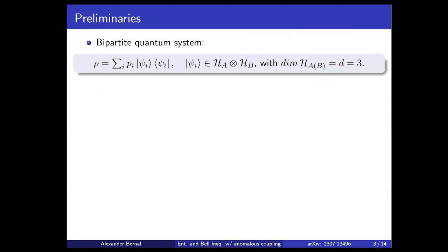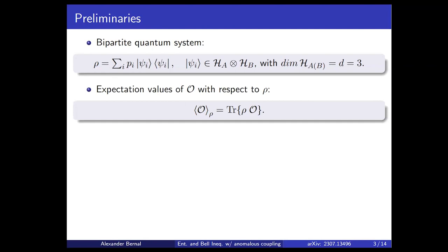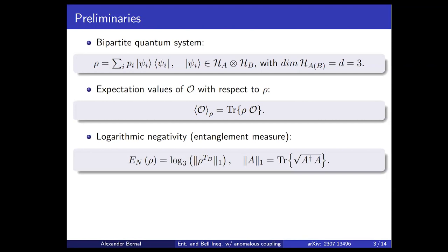Before entering into details, let me remind you of some mathematical tools you have seen this week, though there are some subtleties you may find interesting. We consider a bipartite quantum system where the Hilbert spaces of both Alice and Bob are the Hilbert spaces of the possible spin projections. Because we are considering vector bosons, spin equals one, so we are dealing with qutrit systems. The entanglement is quantified using the logarithmic negativity, an entanglement measure.